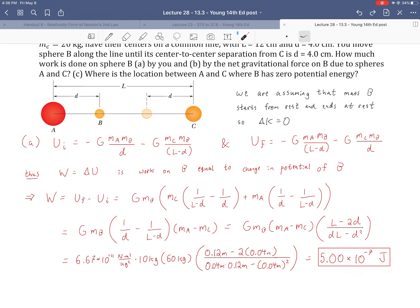Then clean it up a little bit more by doing a common denominator. Plug in the values and we get 5 times 10^-7 joules. So this is positive work. This is how much work it would take to move B from there to there.